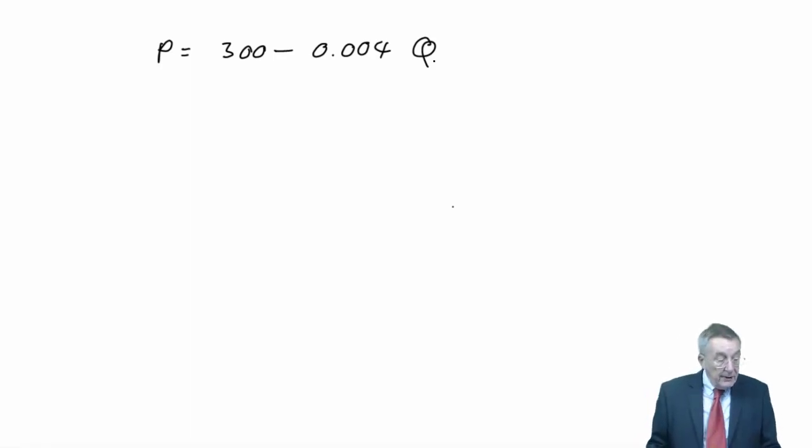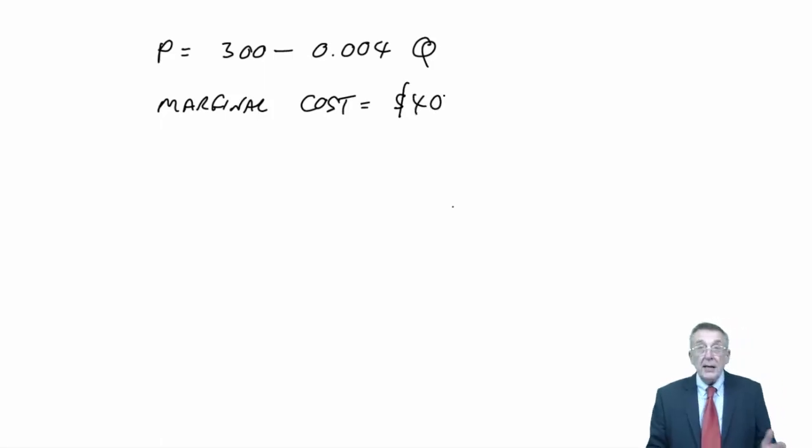We're also told that the variable or marginal cost is $40 a unit. Here, the cost per unit does stay fixed, however many units we produce.